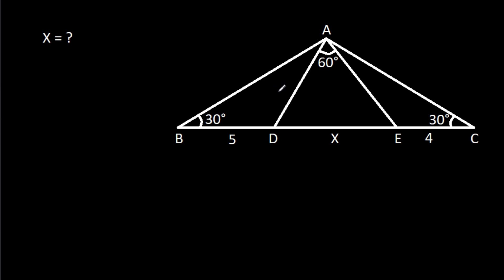In this video, we have been given that angle ABD is 30 degrees, angle ACE is 30 degrees, and angle DAE is 60 degrees. BD is 5, CE is 4, and DE is X. We have to find X.